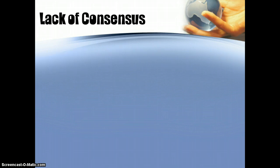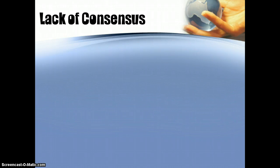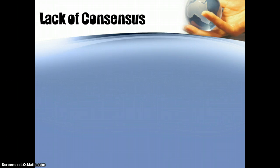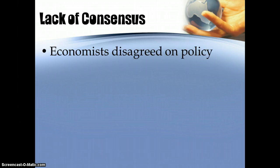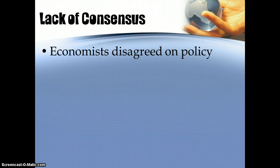That system worked great for economists up until about the 1930s when suddenly there was this massive downturn known as the Great Depression. Economists were trying to figure out what to do about it, and there was not a whole lot of agreement. They start with the classical theory, but that's not working for them, and so they begin to discuss what the appropriate economic policies ought to be. There's a wide-ranging dispute over what the right approach is.